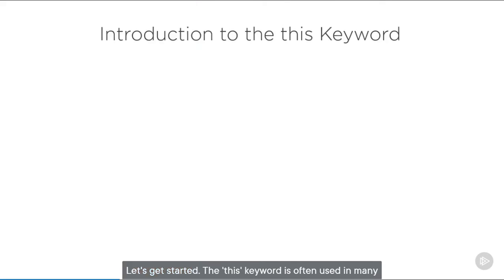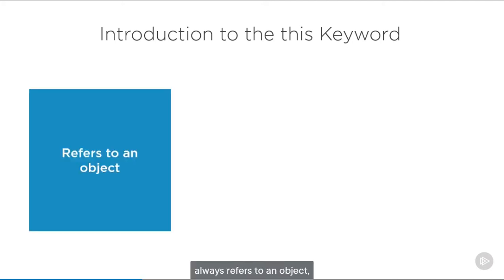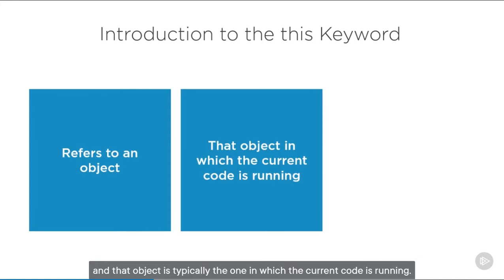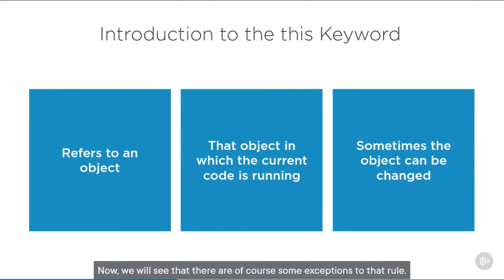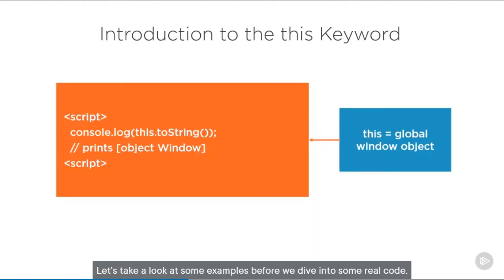The 'this' keyword is often used in many object-oriented programming languages. Basically, 'this' always refers to an object, and that object is typically the one in which the current code is running. We will see that there are some exceptions to that rule. Let's take a look at some examples before we dive into some real code.